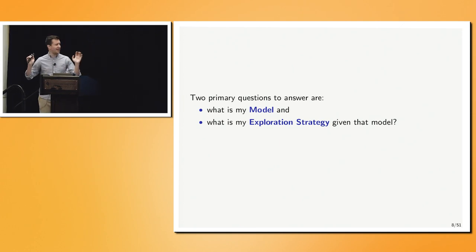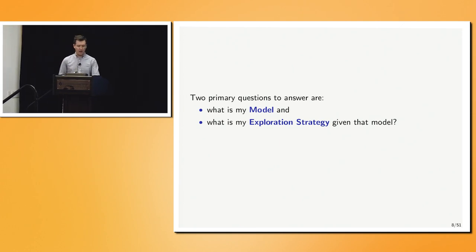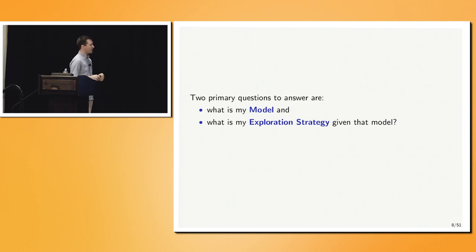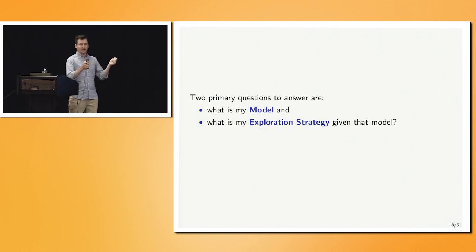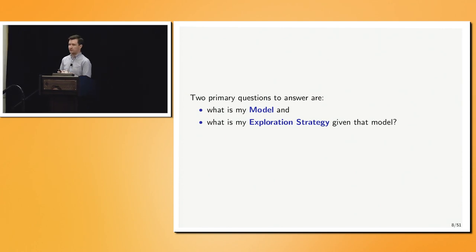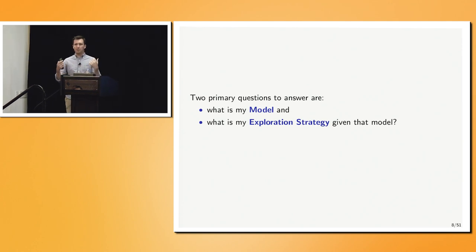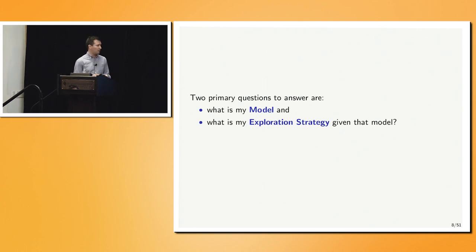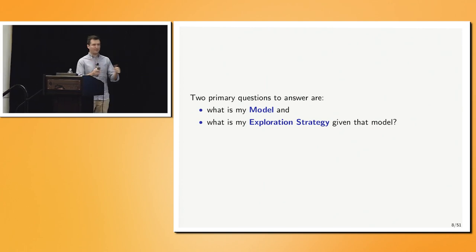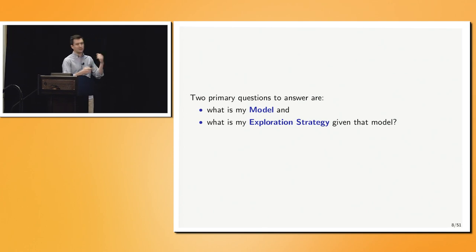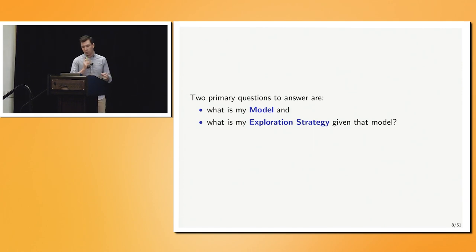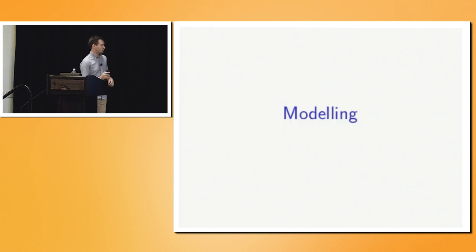Now that we've taken a high-level overview of Bayesian optimization and its relationship to bandits, we can ask two primary questions. First, what is the model I'm going to use — the mechanism by which I'll model my latent function? And then, given that model, what is the exploration strategy I'll use to query novel points within the input space?